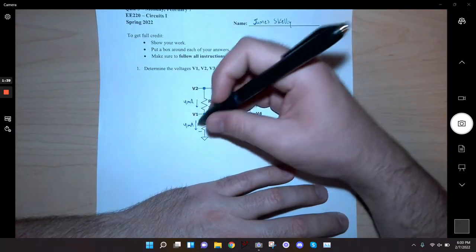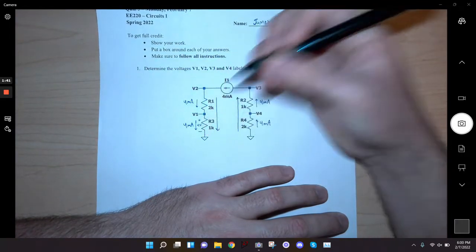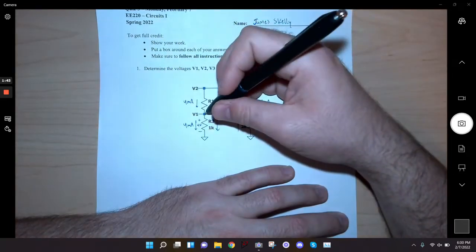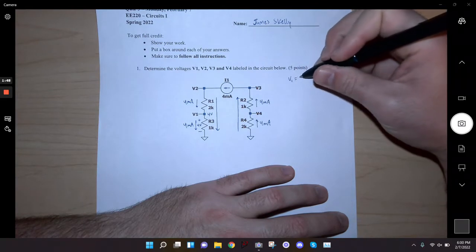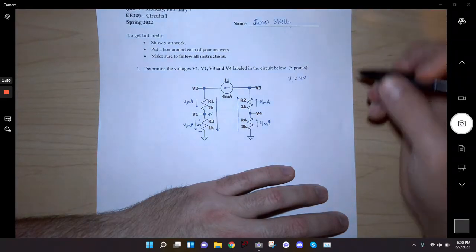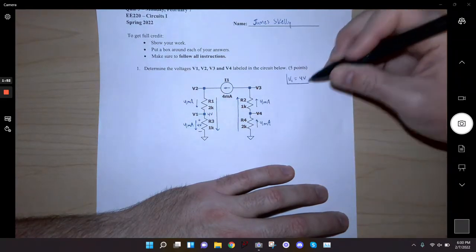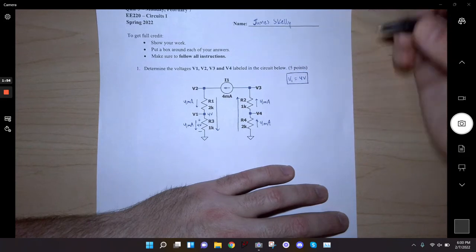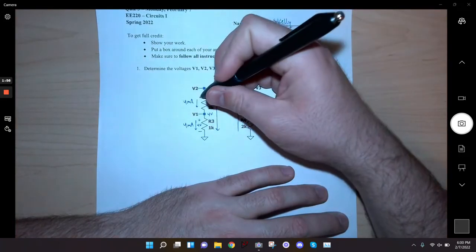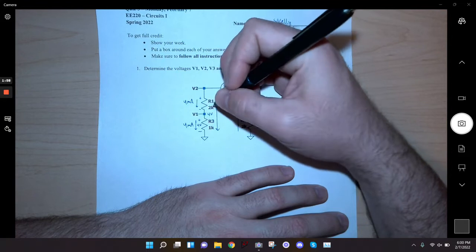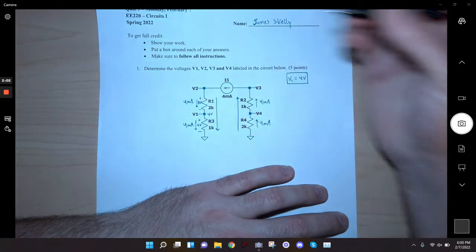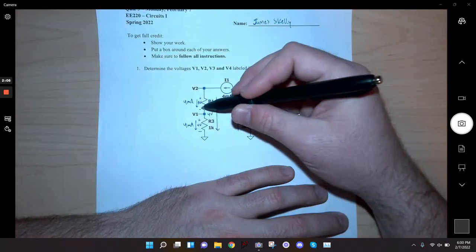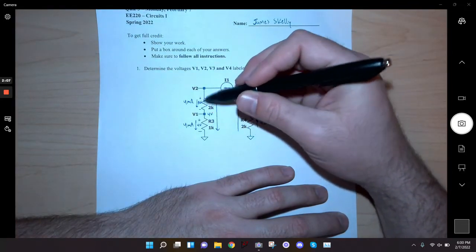So that means v1 is 4 volts. So v1 is 4 volts, box that and move on. Now I know the drop across this resistor is 4 milliamps times 2k, which is 8 volts.